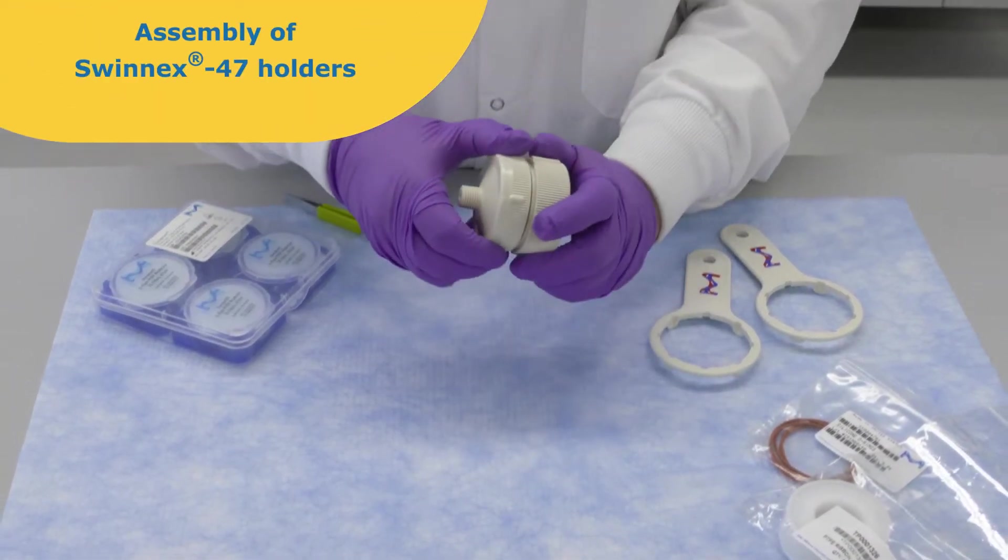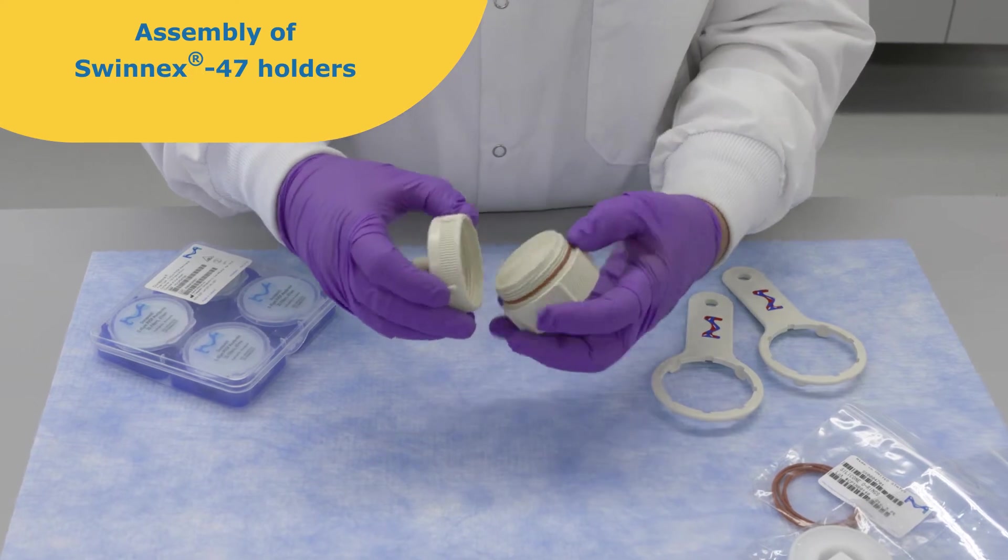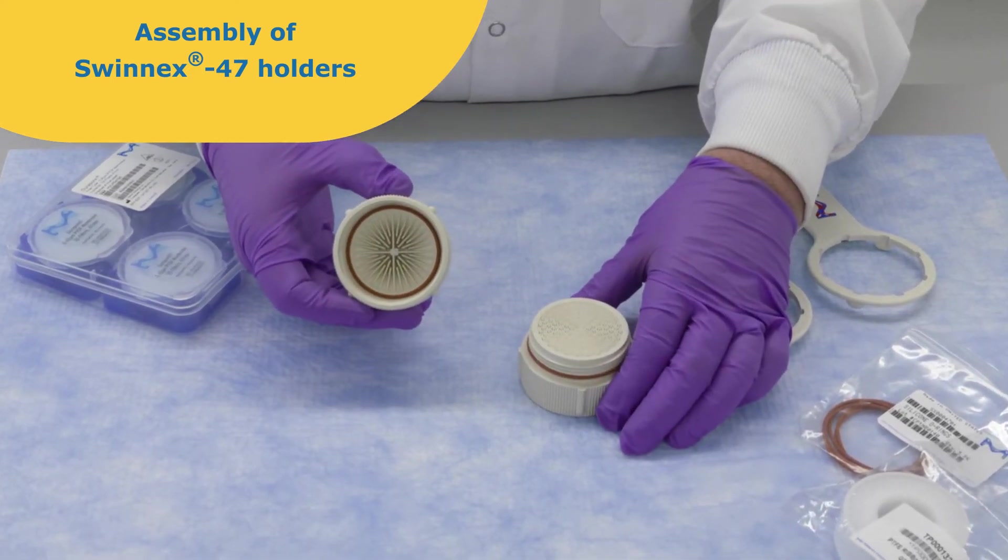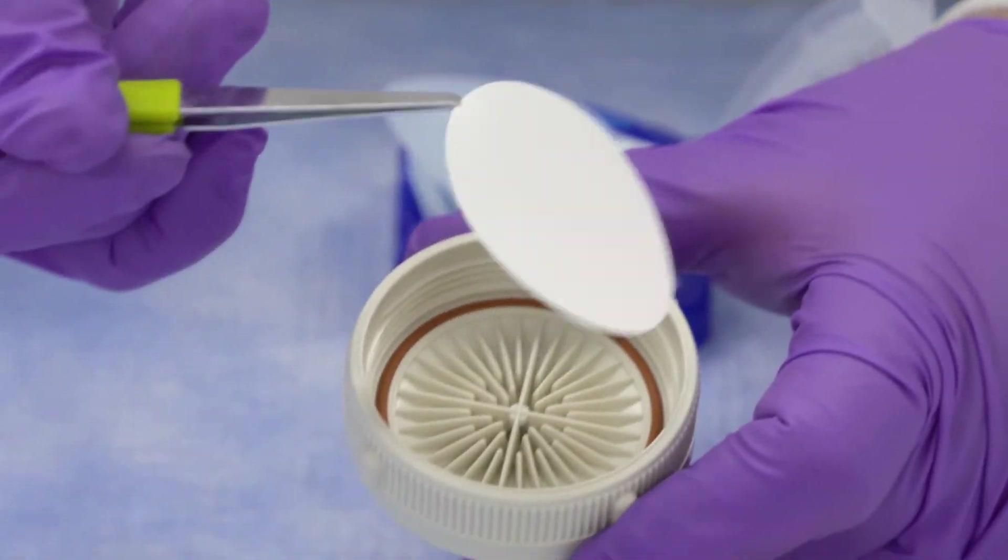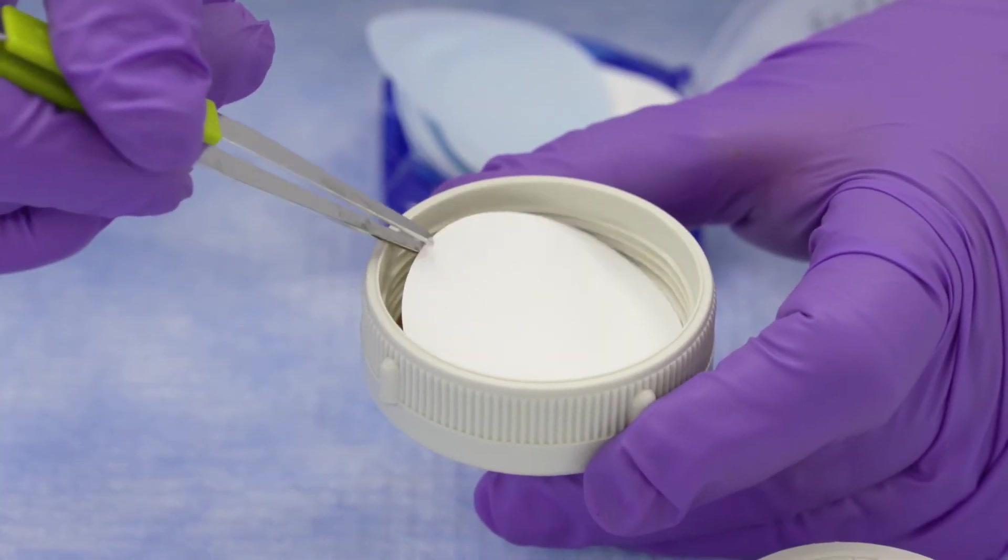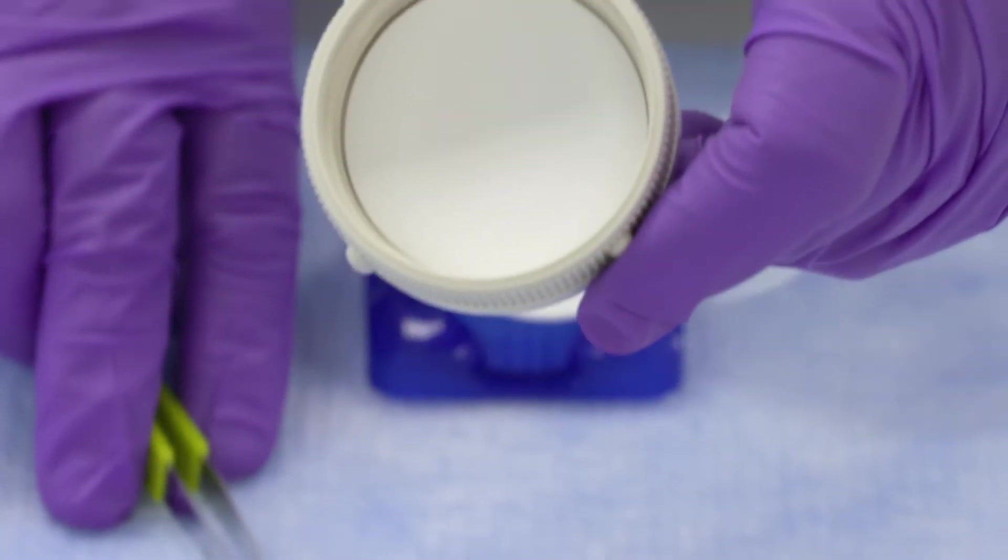Swinex 47 holders have an o-ring seated in the top half of the holder. Your model may have a gasket seated also on the lower half. Check that the o-rings are in place. Position the filter on top of the o-ring, minding filter orientation if necessary.